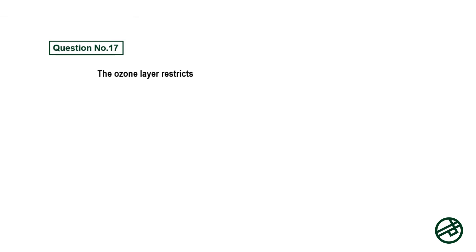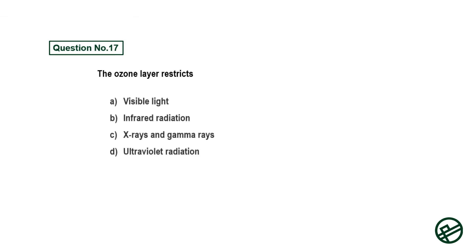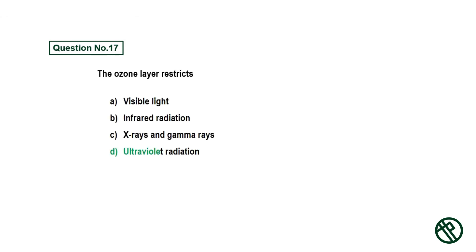Question number seventeen: The ozone layer restricts — option A: visible light, option B: infrared radiation, option C: X-rays and gamma rays, option D: ultraviolet radiation. Answer is option D: ultraviolet radiation.